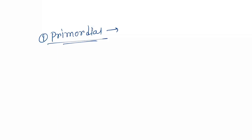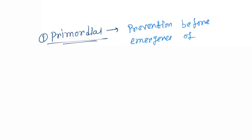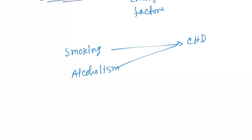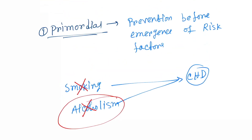The first one is primordial prevention. Primordial prevention is prevention before the emergence of risk factors. For example, smoking and alcoholism lead to coronary heart disease. If a person does not smoke and does not take alcohol, no risk factor will emerge — that is prevention before the emergence of risk factors. This is the primordial prevention.